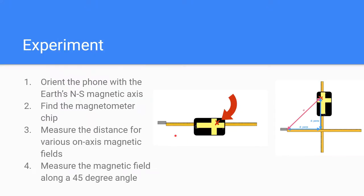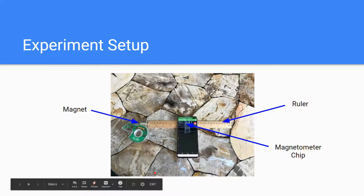The experiment itself involved measuring the magnetic field from a bar magnet using a phone app along various locations. So first we oriented the phone with the Earth's magnetic axis to simplify measurements, found the phone's magnetometer chip to know where to measure from, and then measured the distance on various on-axis points and measured the magnetic fields along a 45 degree angle from the bar magnet. Here's a picture of the experimental setup.